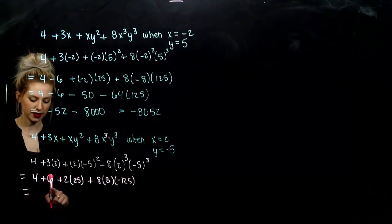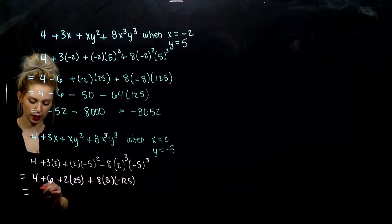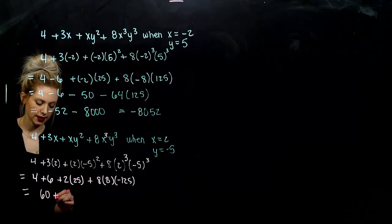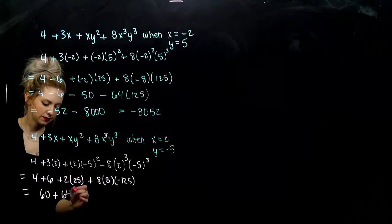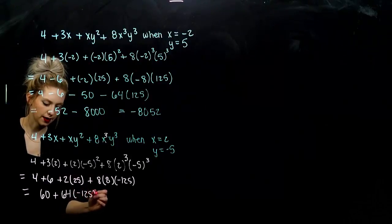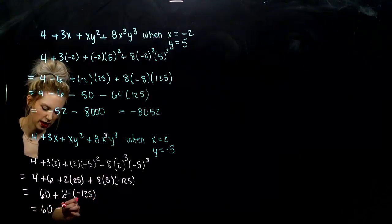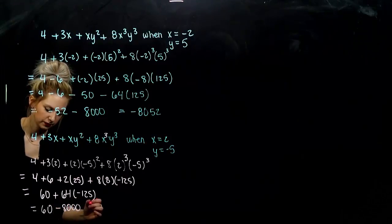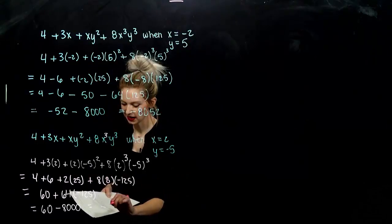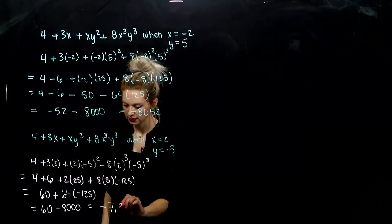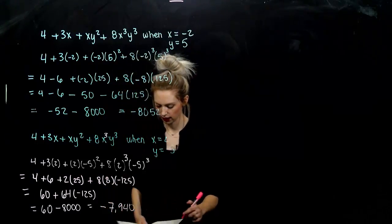So as we're going, I've got 10 and 50 together will give me 60. And I'm adding 8 times 8 is 64 times negative 125. So I've got 60 and I'm taking away 8,000. So what are we left with in the end? Negative 7,940 altogether.